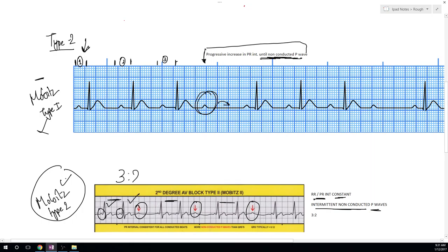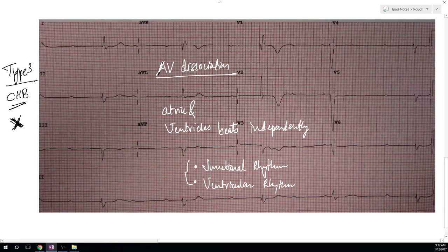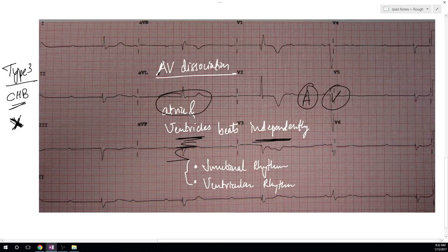In type 3, that is complete heart block, it is also known as complete heart block. The AV node is not sending any impulses from SA node to ventricle, so the atria and the ventricle both of them beat independently. Atria beats at higher rate, ventricle beats at lower rate.